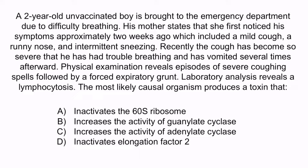Review question: A two-year-old unvaccinated boy is brought to the emergency department due to difficulty breathing. His mother states symptoms began approximately two weeks ago, including a mild cough, runny nose, and intermittent sneezing. Recently the cough has become so severe that he has had trouble breathing and has vomited several times afterward. Physical examination reveals episodes of severe coughing spells followed by a forced expiratory grunt. Laboratory analysis reveals a lymphocytosis. The most likely causal organism produces a toxin that: A) inactivates the 60S ribosome, B) increases the activity of guanylate cyclase, C) increases the activity of adenylate cyclase, or D) inactivates elongation factor 2. This boy is unvaccinated, has a lymphocytosis, and is presenting with whooping cough — severe coughing spells followed by a forced expiratory grunt — as well as post-tussive emesis. These signs and symptoms are classic for Bordetella pertussis.